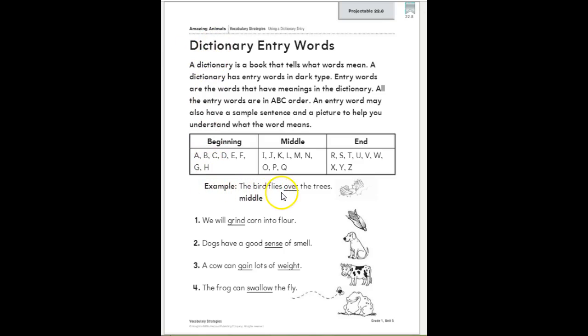So here is the example: the bird flies over the trees. Okay, my entry word is over. It starts with the letter O.